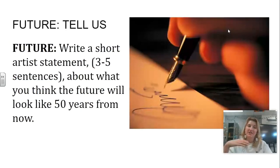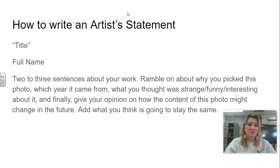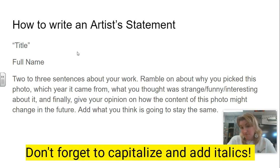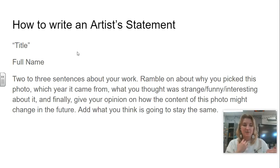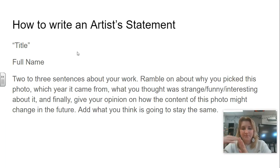The last thing you're going to do is tell us what you think the future is going to look like. You're going to write a short artist statement — three to five sentences about what you think the future will look like 50 years from now. Put the title, give it a title. Do your full name, then write two to three sentences about this work — these are people you don't really know so you might have to do a little research. Ramble on about why you picked the photo, what year it came from, what you thought was strange, funny, or interesting about it.